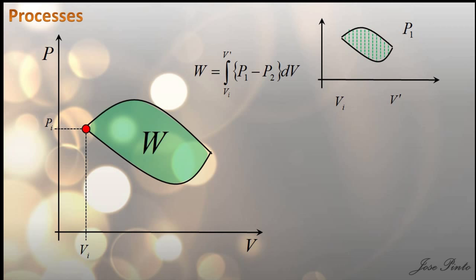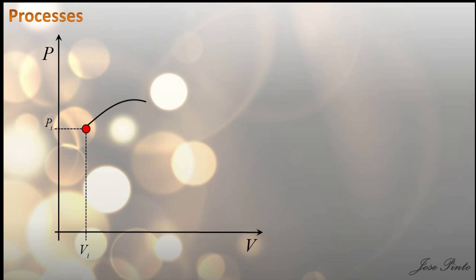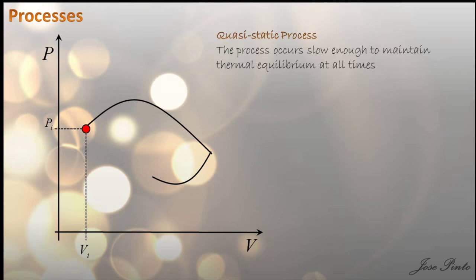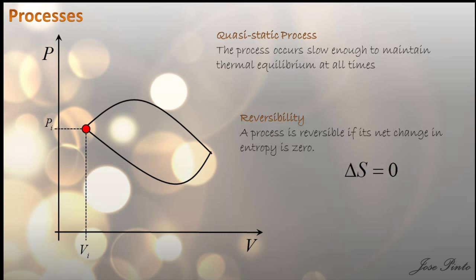Many times you will hear the word quasi-static. A quasi-static process is one where it happens slowly enough to maintain thermal equilibrium at all times. And finally, a process is reversible if the total change in entropy is zero. All these definitions you should be writing them down.